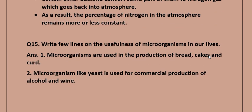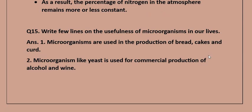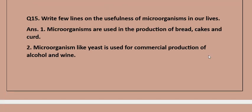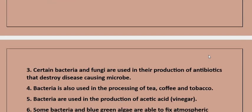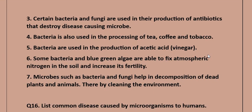Question 15: Write a few lines on the usefulness of microorganisms in our lives. Answer: Microorganisms are used in the production of bread, cakes, and curd. Yeast is used for commercial production of alcohol and wine. Certain bacteria and fungi are used in the production of antibiotics. Bacteria are also used in the processing of tea, coffee, and tobacco, and in the production of acetic acid (vinegar). Some bacteria and blue-green algae fix atmospheric nitrogen in the soil and increase its fertility. Microbes such as bacteria and fungi help in decomposition of dead plants and animals, thereby cleaning the environment.